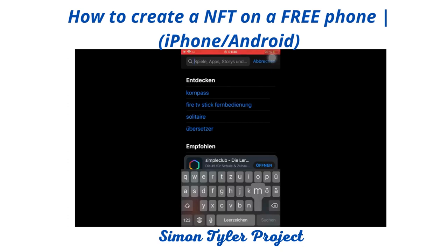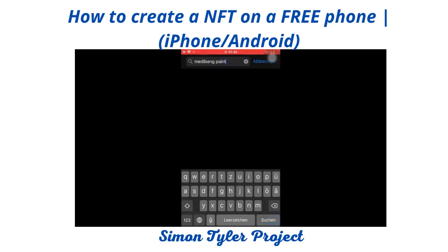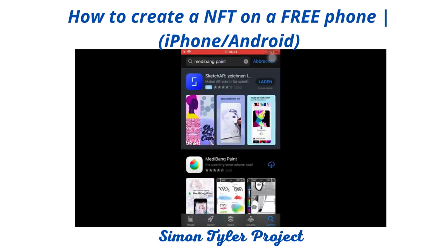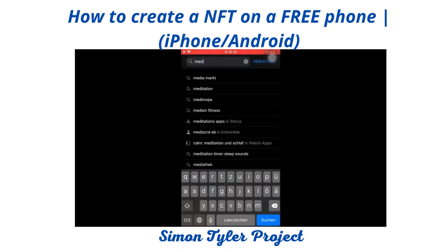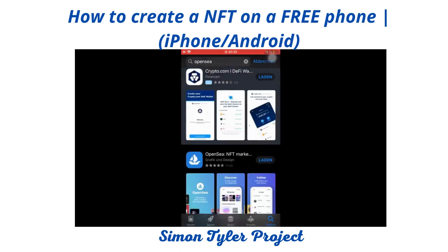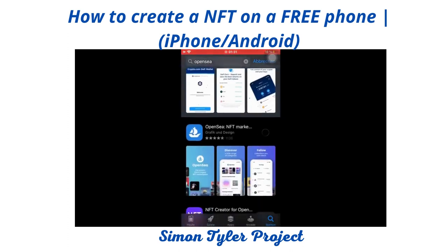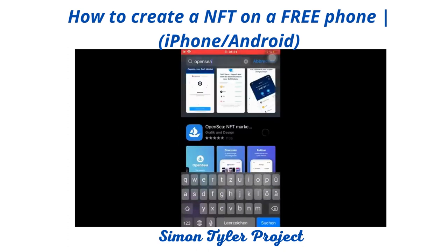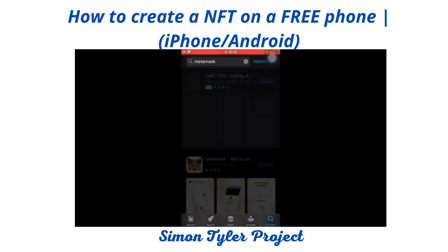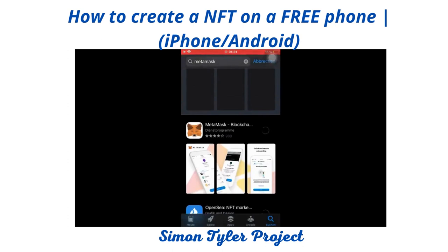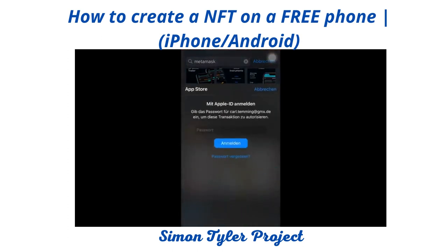The first thing we need is Medibang Paint — search it up and download it. That's the app we'll spend the most time on because it's our sketching app where we create the drawings for our NFT. Then search for OpenSea, the NFT marketplace, and download that. Next we need MetaMask, since we're going to log in with MetaMask on OpenSea. You can use another wallet too, as long as it works with OpenSea.